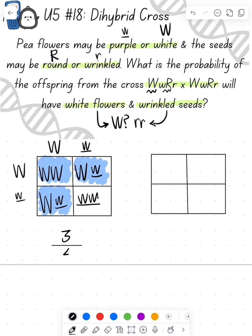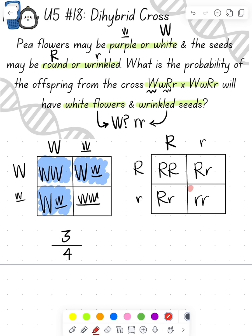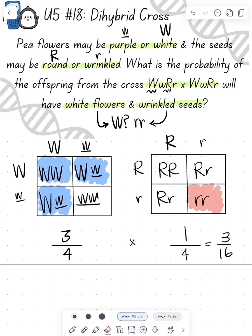So we're going to do the same thing, but now we'll do a monohybrid cross with the R's. One-fourth will be homozygous dominant, one-half are going to be heterozygous, and one-fourth is homozygous recessive. We'll shade in the ones that are wrinkled, and that means one-fourth are wrinkled. Three-fourths times one-fourth is three-sixteenths, so three-sixteenths are white and wrinkled.